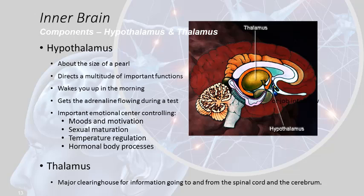The hypothalamus wakes you up in the morning, gets your adrenaline flowing. It's very important in your moods and your motivation. Hormonally, it's important for sexual maturation. It helps regulate temperature by working with the brainstem. And it's also involved with almost all of the hormonal body processes, all the way into the thyroid, into the medulla of the adrenal glands. So it really sets up all of the enzymatic interactions with the body over a period of just a few seconds after you've experienced an emotional moment.